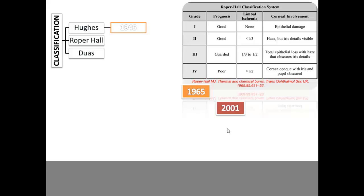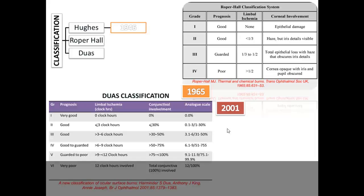Dua proposed a new classification in 2001, but it wasn't until 2011 that papers comparing the efficacy of Roper Hall's and Dua's classifications began publishing. The importance of Dua's classification grew with the recognition of the pre-Descemet's membrane layer (Dua's layer). Dua included limbal ischemia but stated that conjunctival involvement is more important than corneal involvement.